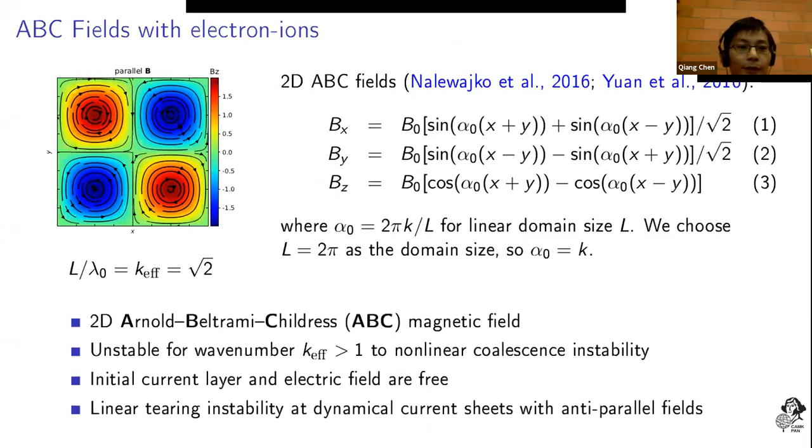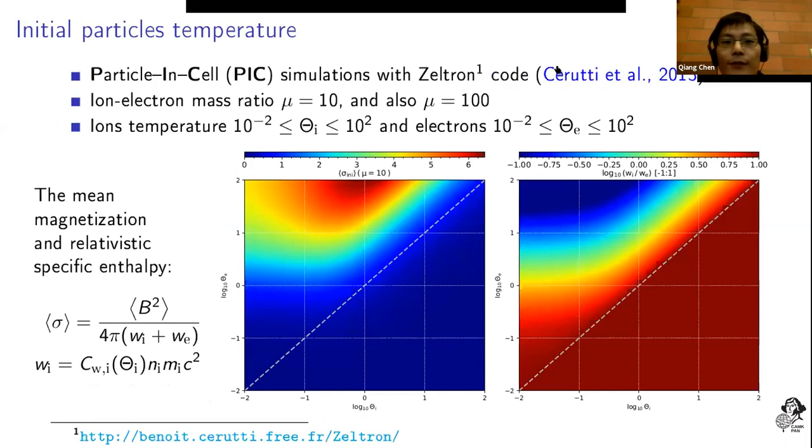The field is illustrated in the figure. The typical feature that distinguishes it from the Harris layer type is that ABC field doesn't need an initial current layer.